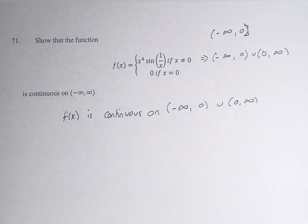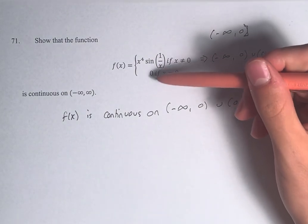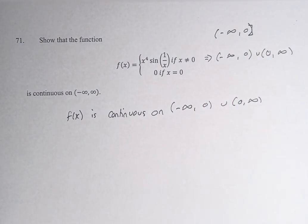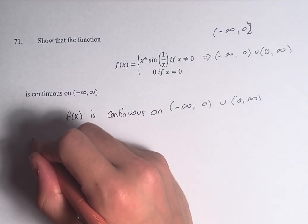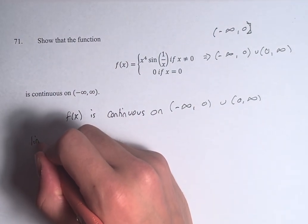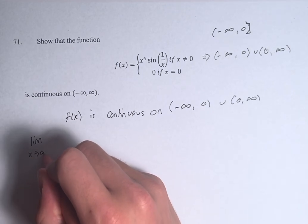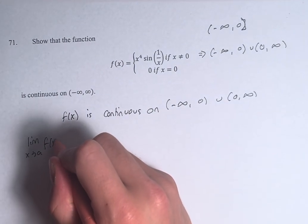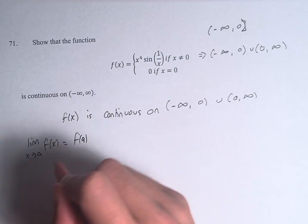However, we can't say that at 0 itself, because that is where it switches between the pieces of this piecewise function, we cannot say that the function is continuous at x equals 0, so we have to show that separately. So a function is continuous at point a if the limit as x approaches a of f(x) is equal to f(a), right?